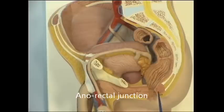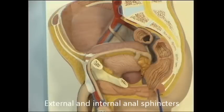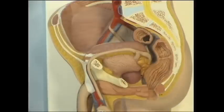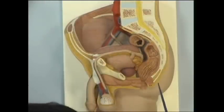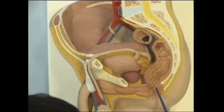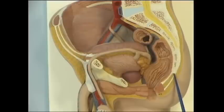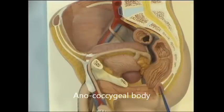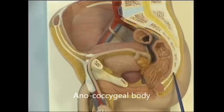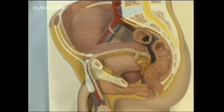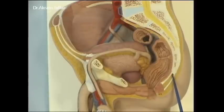This is the anal canal here. The anal canal is surrounded by two sphincters: an internal anal sphincter and an external anal sphincter, which is the voluntary sphincter. Between the coccyx and the anal canal, there is a ligament or a raphe — the midline raphe — the anococcygeal ligament or the anococcygeal raphe. This is the meeting point of the two levator ani muscles.